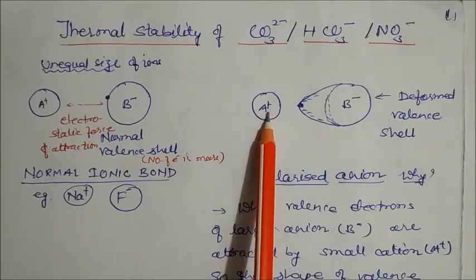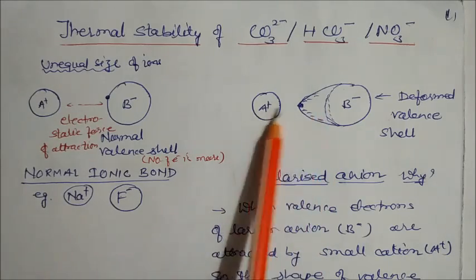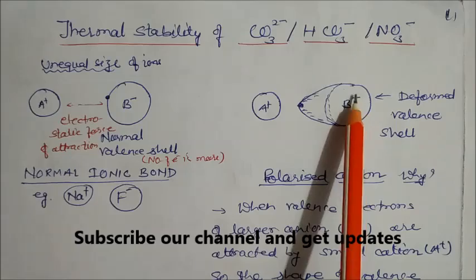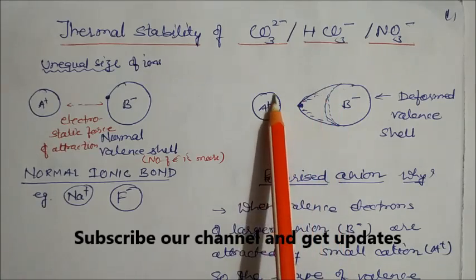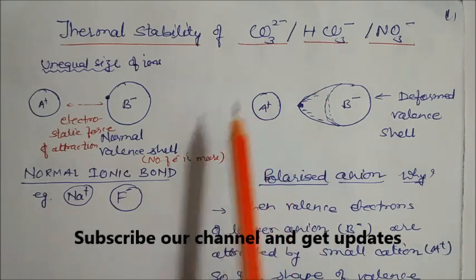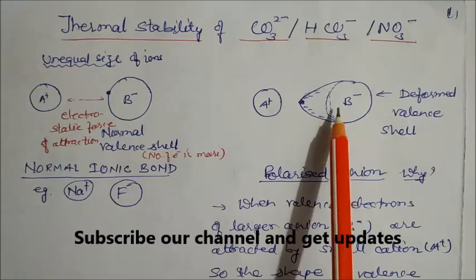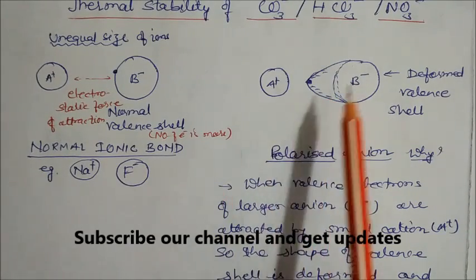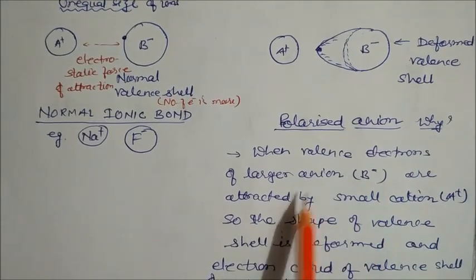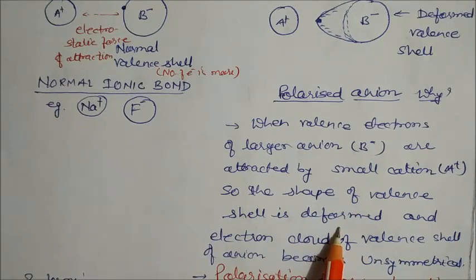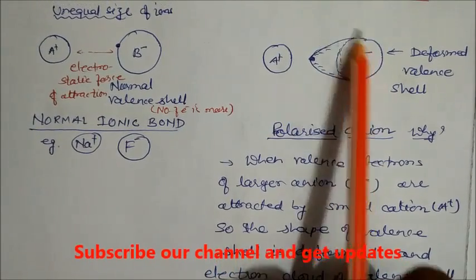In another case, A plus is much smaller than B minus — sizes are totally unequal. Since B minus is a large anion with many valence electrons, the small cation A plus with high positive nuclear charge distorts those valence electrons toward itself. This deforms the electron cloud, making the anion unsymmetrical — this phenomenon is called polarization of anion by cation.